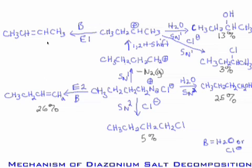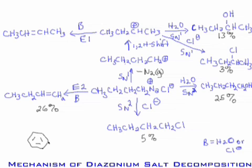Note that 1-butene predominates because E2 predominates over carbocation formation. Carbocation formation is unlikely, so E1 happens less often. So many different products forming at various percentages result from the various nucleophilic substitution reactions — SN1, SN2 — and elimination reactions with the possible nucleophiles and bases available in solution. So many different products render this reaction synthetically not useful in a laboratory sense. Alkane diazonium chloride is therefore much less synthetically useful than benzene diazonium chloride, which falls apart more slowly and is more stable.